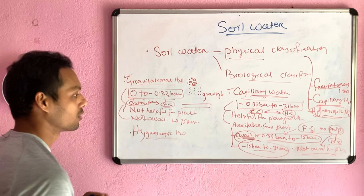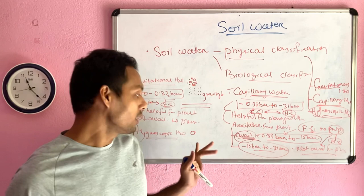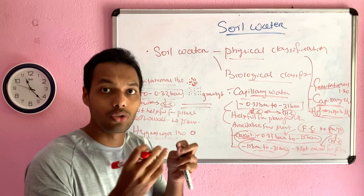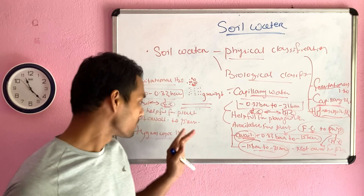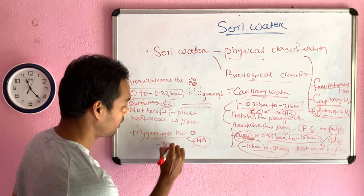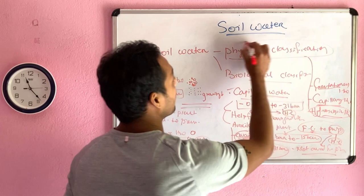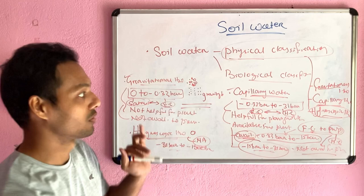The third type is hygroscopic water. Hygroscopic water is water that is held in a very thin layer very closely bound to the soil particle and is not available for plant uptake or any kind of movement. The range of hygroscopic water is from minus 31 bar to beyond — possibly up to 1000 bar. This completes the physical classification of soil water.